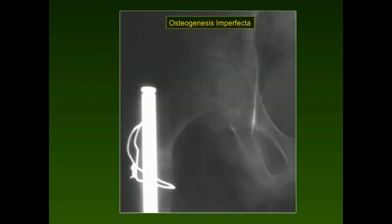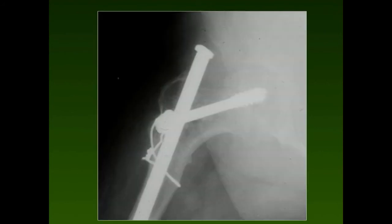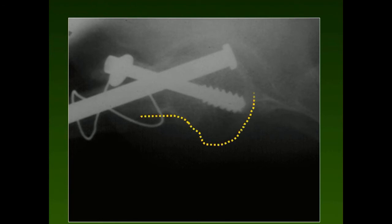This is a real challenge — a case of osteogenesis imperfecta treated with old Bailey-Dubow flexible rods. It was a transcervical fracture, and it was difficult getting the screw over the proximal pin in very soft bone. These cases are particularly challenging and require leaving the pin in place.